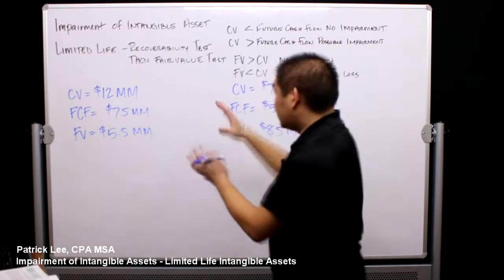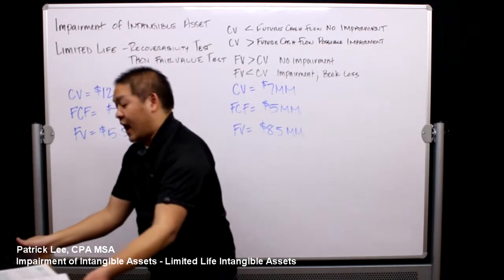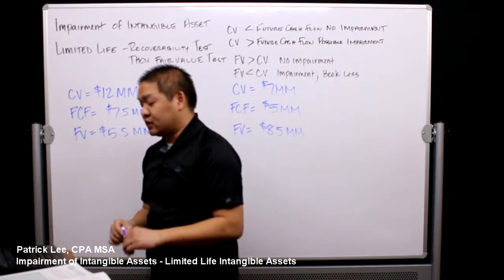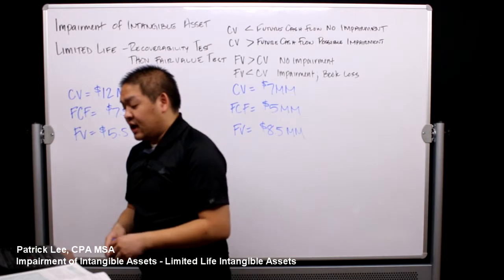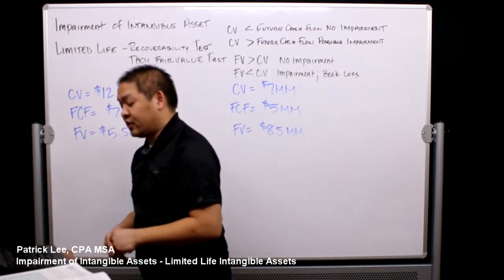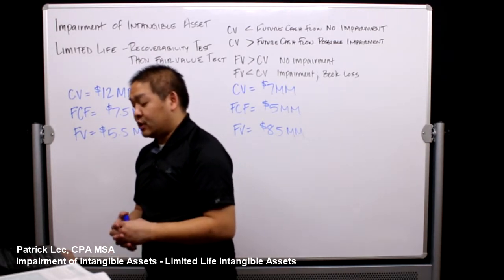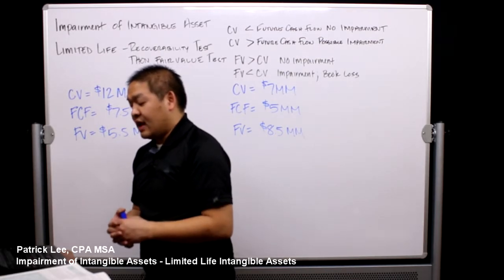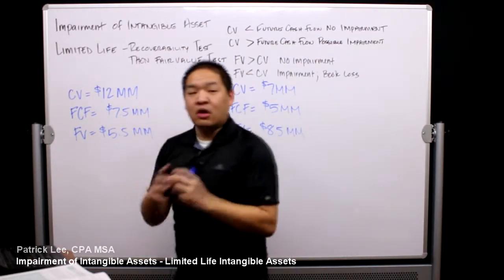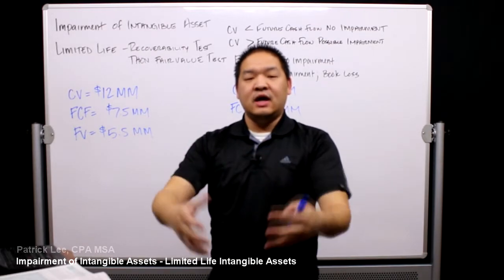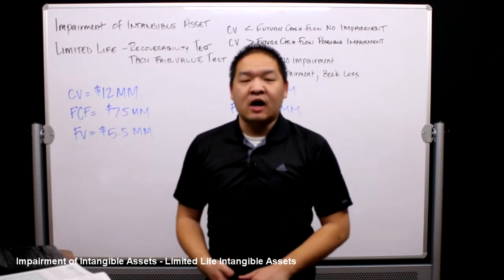Our example: Black Asset has a patent on a machine that produces their widget for sale to businesses throughout the world. Due to a change in technology, it has been increasingly hard to market and sell their widgets. Sales have declined dramatically for the past five years, and Black Asset is reviewing their patent for impairment. The carrying value of that asset is twelve million dollars.